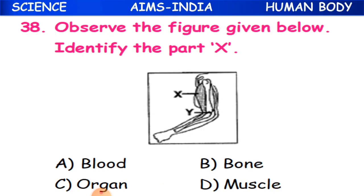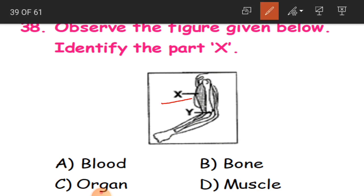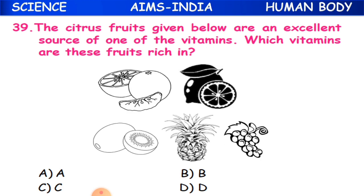Question 38: Observe the figure below and identify part X. In the picture you can see a hand and the elbow area. The X is the muscle in that region, so D is the correct answer.